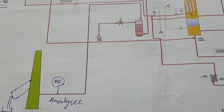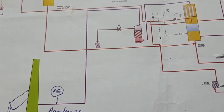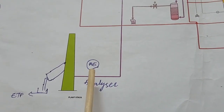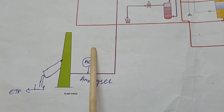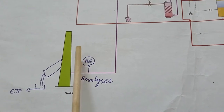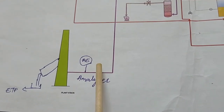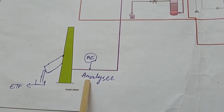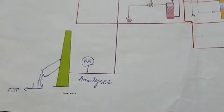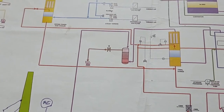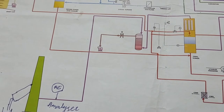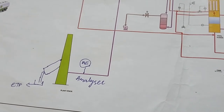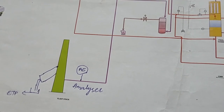Here we have an analyzer to check the exit gas going to the stack. Generally we check whether too much SO2 is going out. When we see too much SO2, we add more air. When we add more air it reacts with SO2 to become SO3, which then becomes sulfuric acid. If air is less, the reaction will not proceed. At the stack we check SO2 in ppm, SO3 in ppm, nitrogen, oxygen, and inert gases.